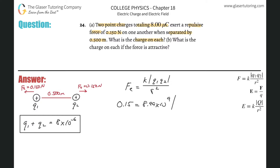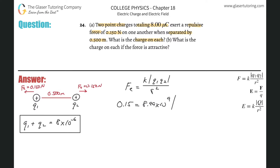We don't know Q1 and we don't know Q2. We have two equations with two unknowns. We solve that by doing substitution. Simply take the first equation and solve it for Q1. So Q1 will equal 8 times 10 to the minus 6 minus Q2. Then take this value and plug it in for Q1 in our Coulomb's law equation, which will allow us to solve for Q2 since we'll then have only one equation with one unknown.